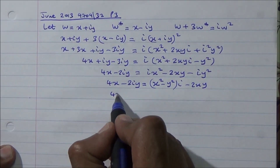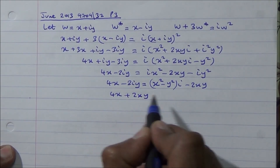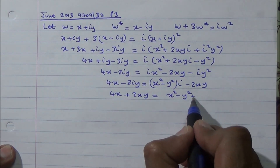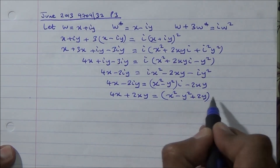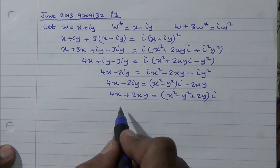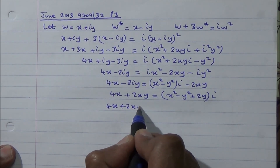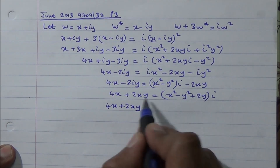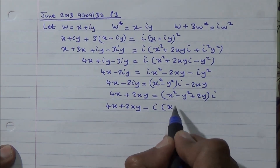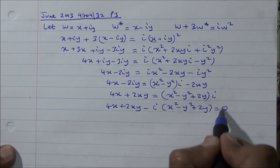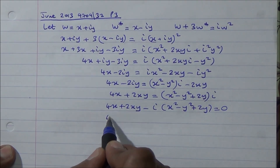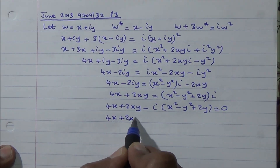Bringing all real parts to one side: 4x plus 2xy equals x squared minus y squared, and minus i times (x squared minus y squared plus 2y) equals 0. Equating real and imaginary parts separately to zero: the real part gives 4x plus 2xy equals 0.